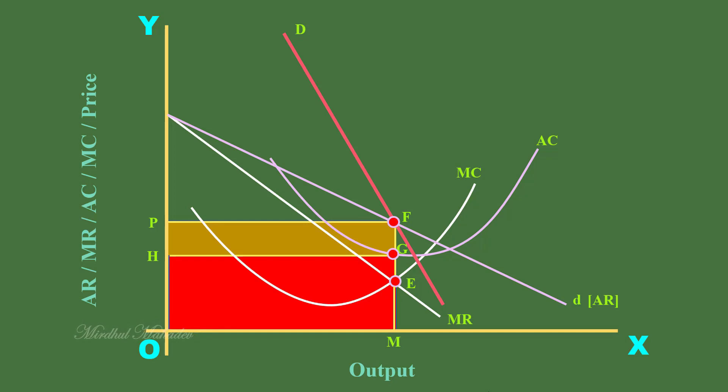Chamberlain assumes that all the firms have the same cost condition. From this we can understand all the firms in the group are in short-run equilibrium enjoying abnormal profit. This is in brief the short-run equilibrium of a firm under monopolistic competition. In the upcoming videos, we shall discuss the three models of long-run equilibrium in parts 3, 4 and 5. We shall meet again.